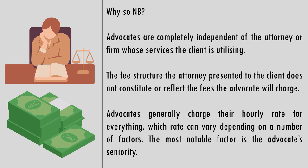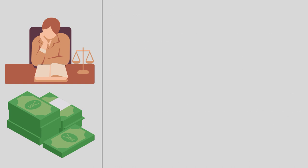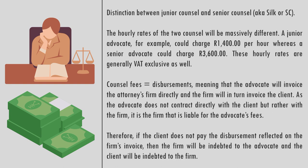Advocates generally charge their hourly rate for everything, which can vary depending on a number of factors. The most notable factor is the advocate's seniority — in other words, whether they are junior counsel or senior counsel, also known as Silk or SC. The hourly rates of the two will be massively different. A junior advocate could charge R1,400 per hour, whereas a senior advocate could charge R3,600. These hourly rates are generally VAT exclusive as well. It is therefore imperative that the client ascertains from the attorney whether the counsel employed is junior or senior, as well as the counsel's rates.